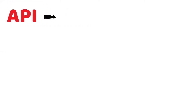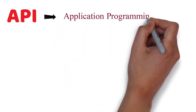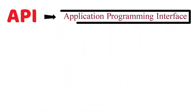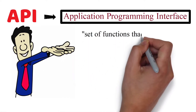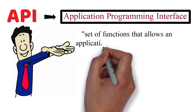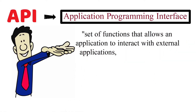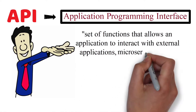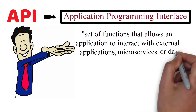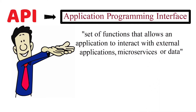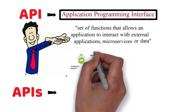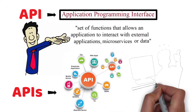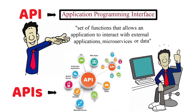API stands for an Application Programming Interface, which is a set of functions that allow an application to interact with external applications, microservices, or data. In other words, APIs allow applications to talk to and interact with one another.